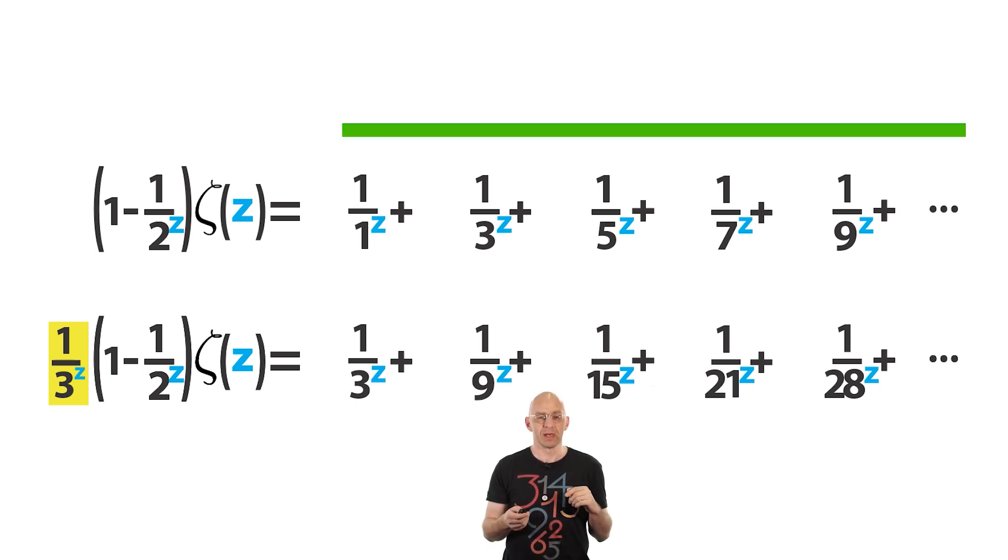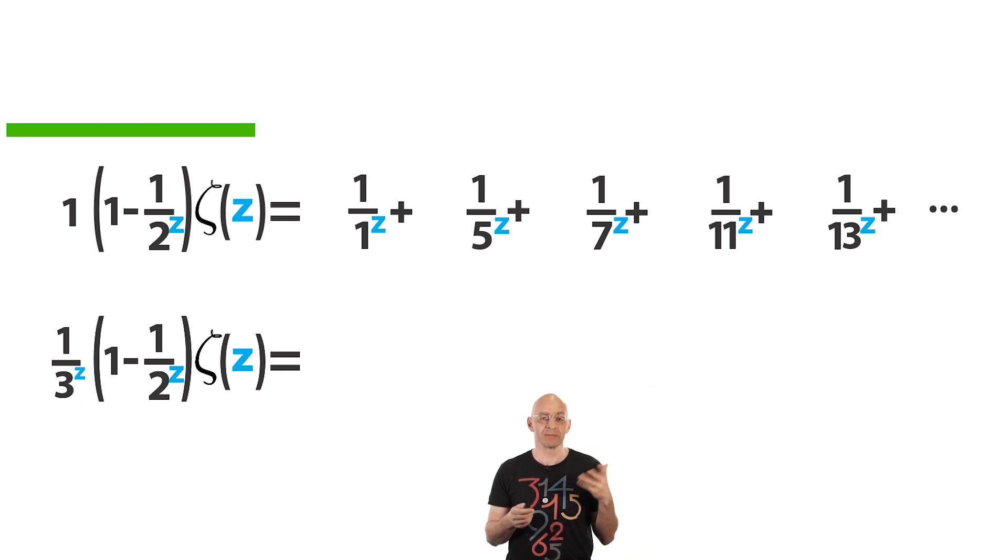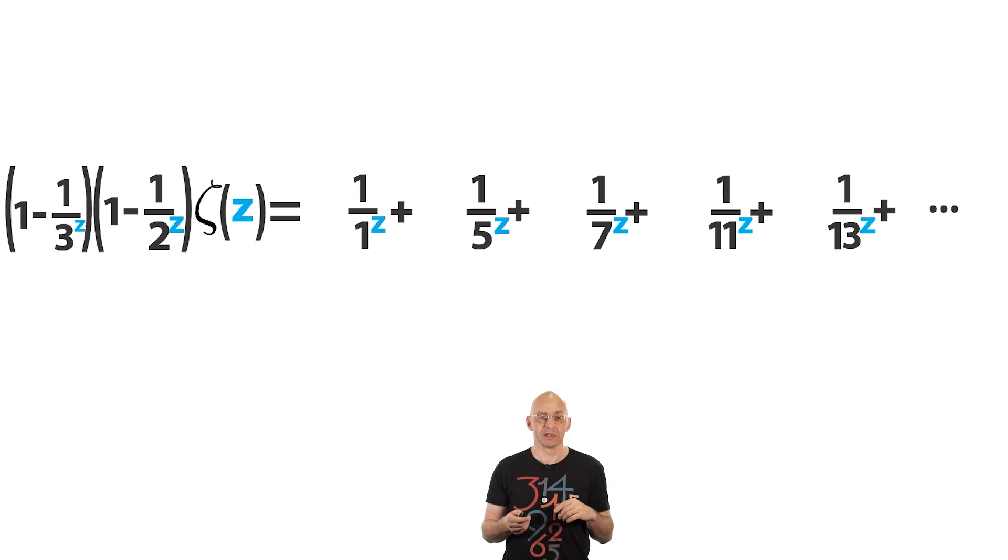Subtract the bottom from the top. And then on the right, all the fractions on the top that have denominators divisible by 3 get wiped out. And on the left, well, what have we got? We've got 1 times something minus 1 over 3 to the power of z times the same something which gives this guy here.